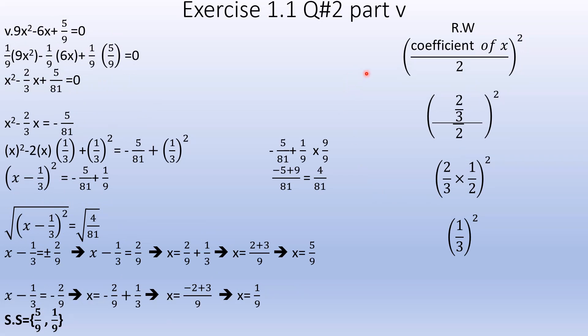Question 2, Part 5: 9x² minus 6x plus 5/9 equals 0. The x² coefficient is 9. So we divide every term by 9. We get x² minus 6x/9 plus 5/81 equals 0, simplifying to x² minus 2x/3 plus 5/81 equals 0.